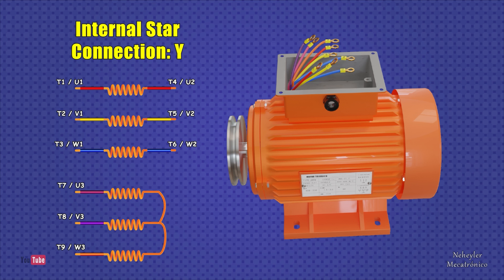A motor with an internal star connection means that the opposite terminals of T7, T8, and T9 are joined or connected internally in the motor. Therefore, the type of connection that must be made is specified on the nameplate, in this case, star.